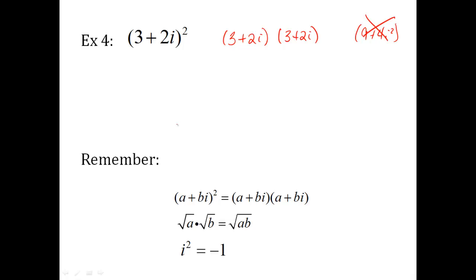Okay, when I do my FOIL, three times three is nine. Outer, I get six i. Inner, six i. Last terms, four i squared.